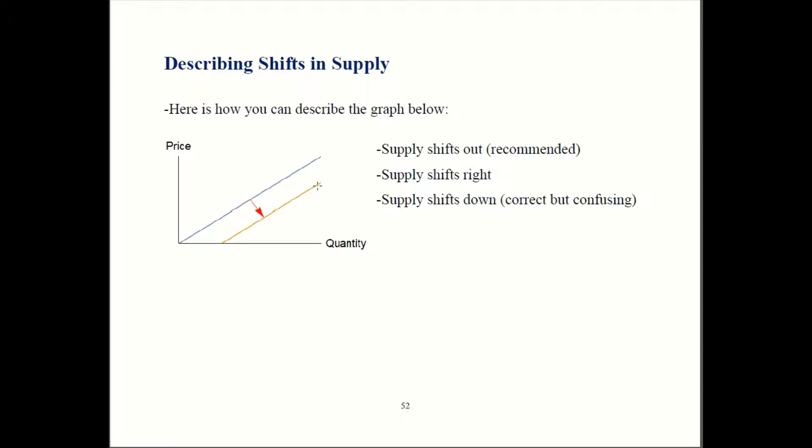Supply shifts down is the one I recommend avoiding because that just clashes with your intuition. We just established that this shift means we're actually having more supply. Shifting down sounds like less, which sounds like less supply. So you'll just create unnecessary confusion for yourself.